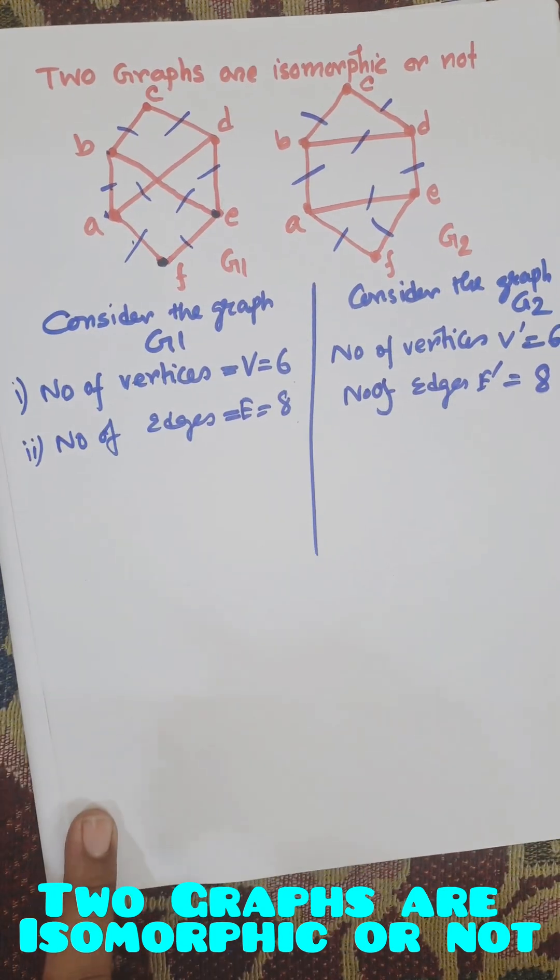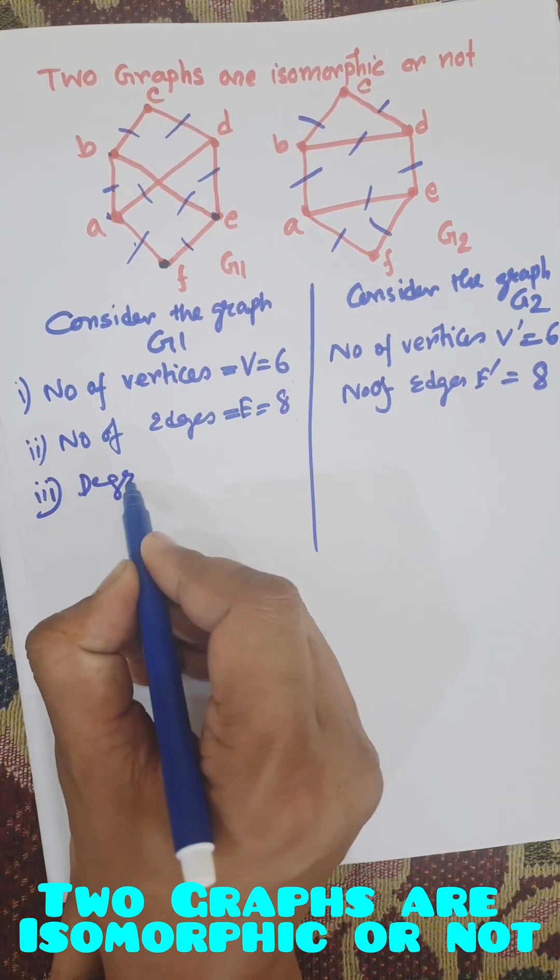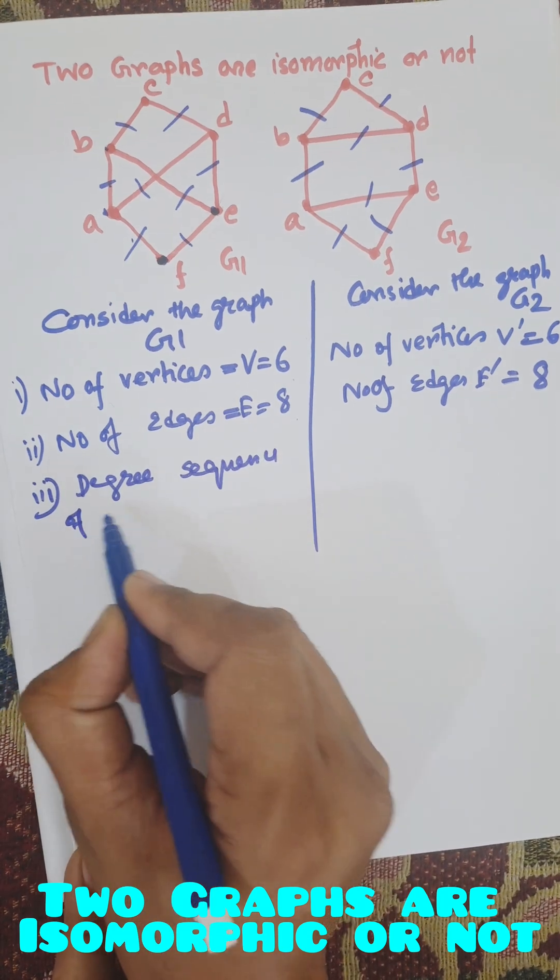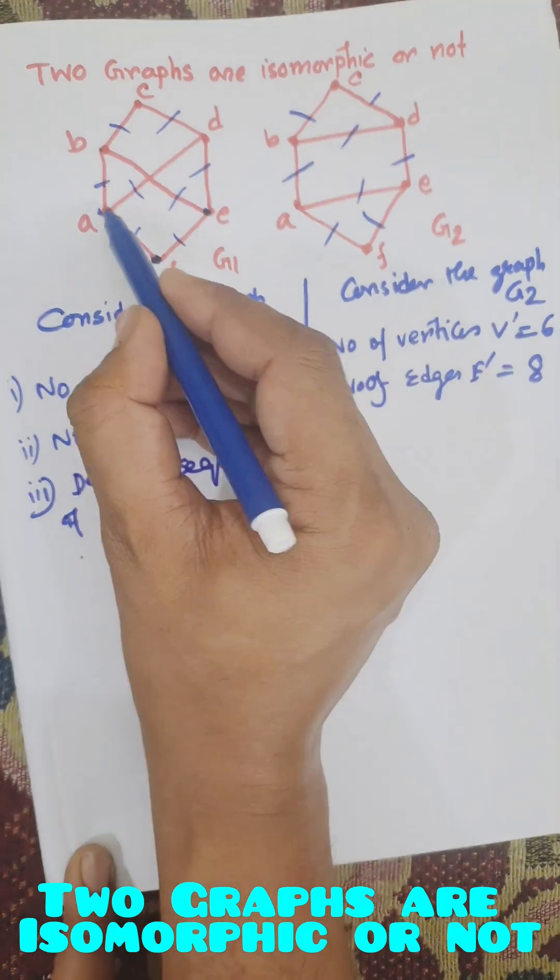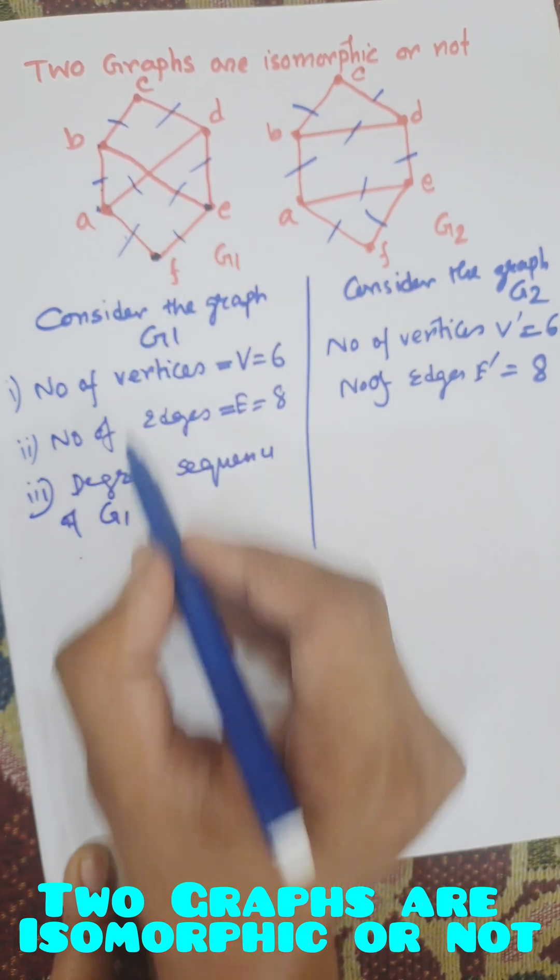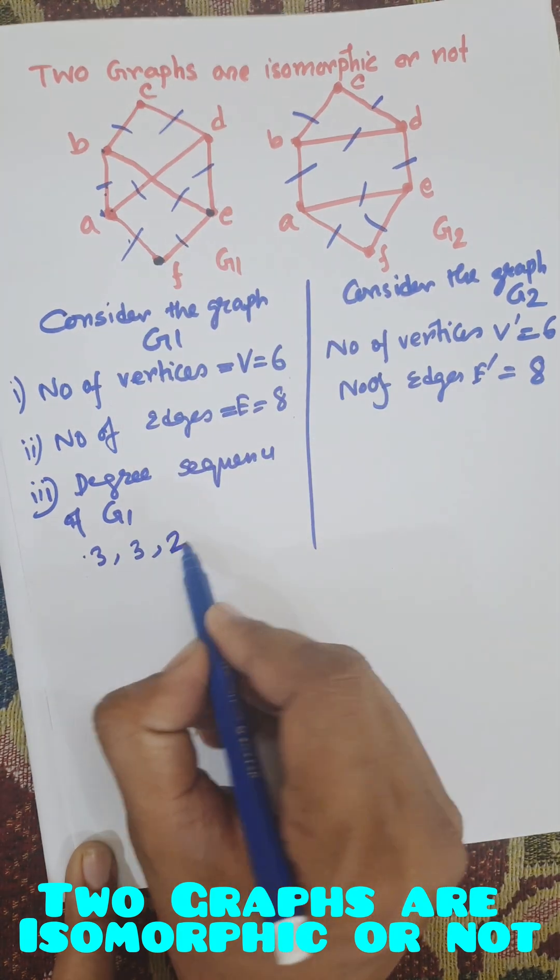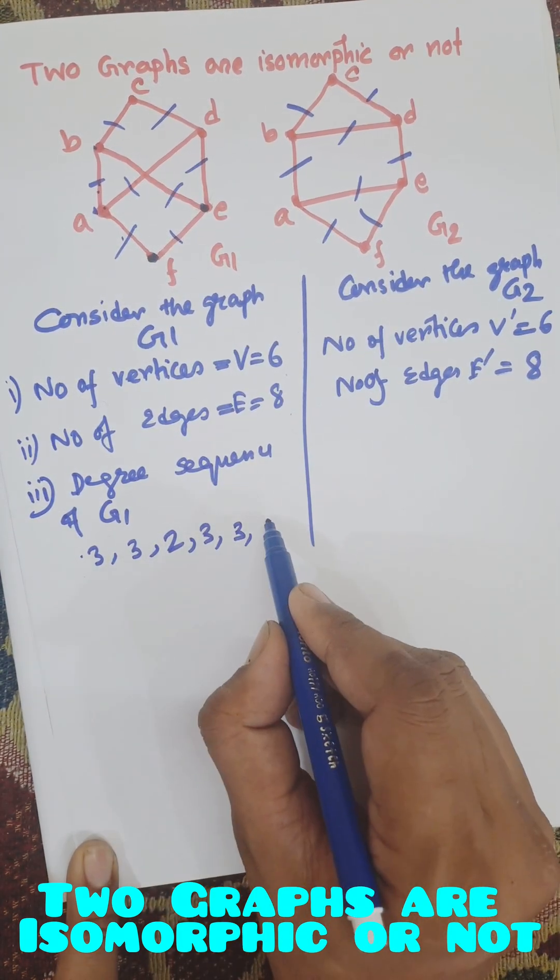Now we need to check degree sequence, degree sequence of G1. Suppose A degree is 1, 2, 3. Number of edges incident on any vertices is known as degree. 1, 2, 3. B is 3, C is 2, D is 3, E is 3, F is 2.